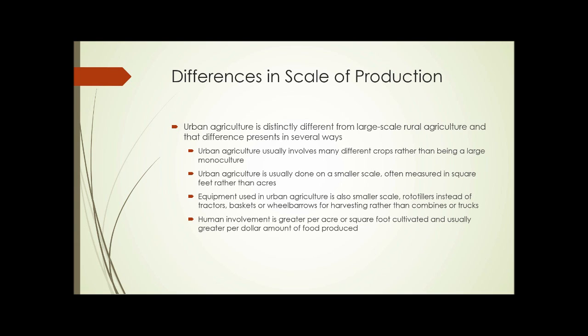The equipment used in urban agriculture is also smaller scale. You may see rototillers being used instead of big tractors, baskets or wheelbarrows for harvesting rather than combines or trucks. And finally, human involvement is greater per acre or square foot that is under cultivation, and usually greater per dollar amount of food produced than it is on a typical farm.